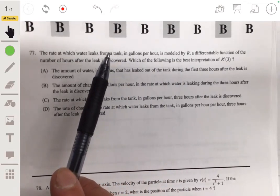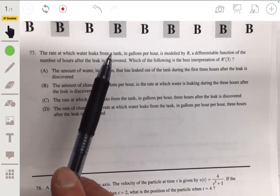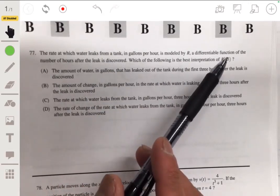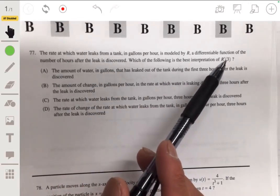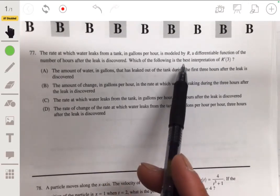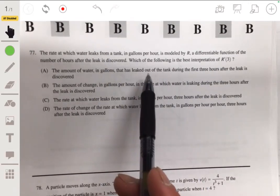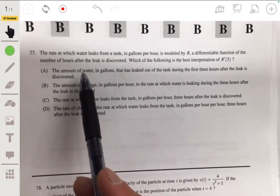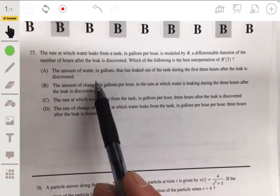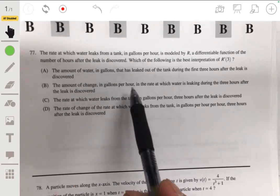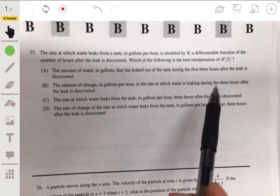At time equals three, or three hours. So let's say the amount of water in gallons—no, we're not talking about amount of water. We're still talking about rate. The amount of change in gallons per hour in which the rate is leaking during three hours.